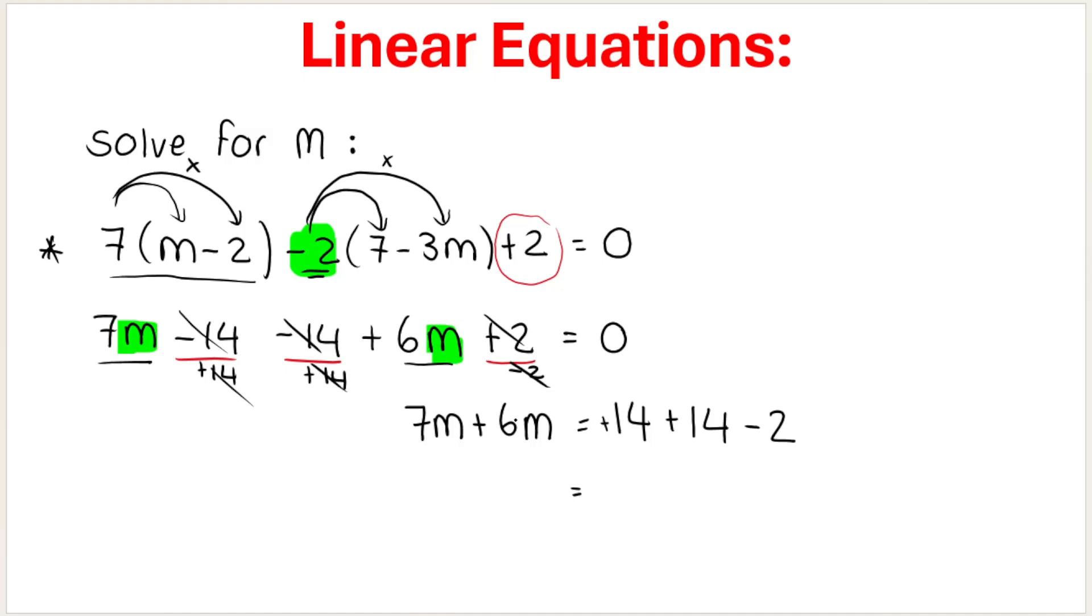So 7m plus 6m is 13m, like terms. 14 plus 14 minus 2 is 26. And then we are multiplying m by 13. So inverse operations of multiply by 13 is divide by 13. We're dividing both sides by 13. m is equal to 26 divided by 13 is 2. Again, one solution.